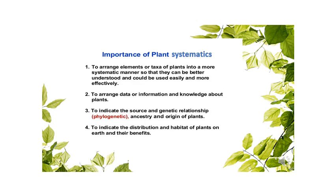The second point is to arrange data, information, and knowledge about plants. Plant systematic provides a synchronized method to arrange data and information regarding any specific organism or plant, helping us to easily find various attributes or characteristics related to that plant. It also indicates the source and genetic relationship — basically the origin of plant — so one can approach the evolutionary history of that plant. Finally, it indicates the distribution and habitat of plants on earth and their benefits, so one can know the localities of specific plant specimens for easiest access or accessibility.